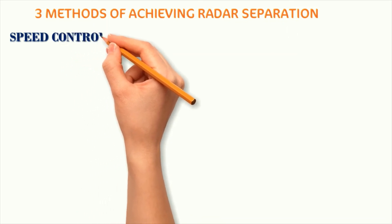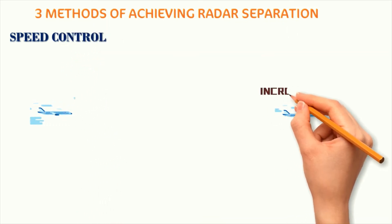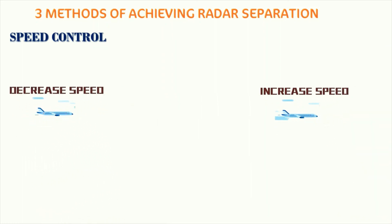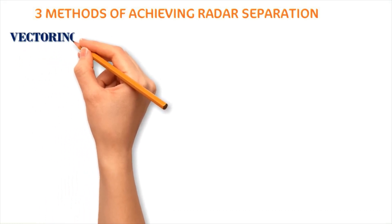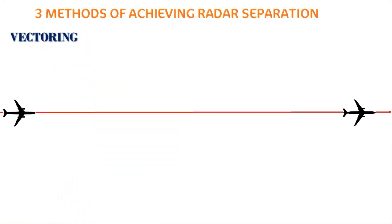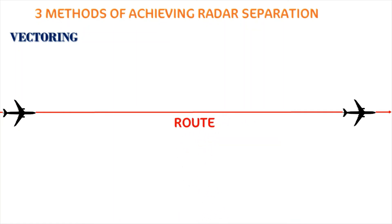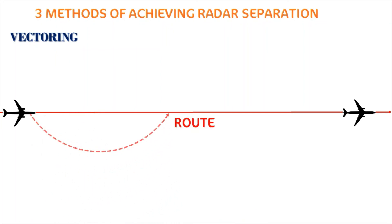Radar separation is achieved using three primary techniques. The first is speed control — achieving radar separation by asking the first aircraft to fly faster, the second aircraft to fly slower, or a combination of both. The second is vectoring — achieving radar separation by making the second aircraft fly a longer route than the first aircraft. This is typically done by asking the second aircraft to fly away from the route for some time and then bringing it back to the route later.